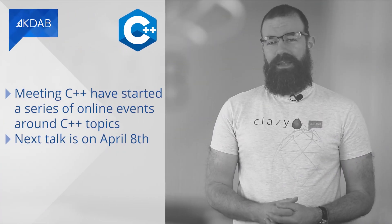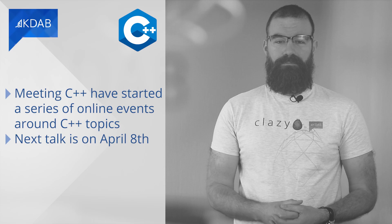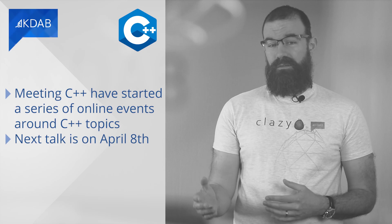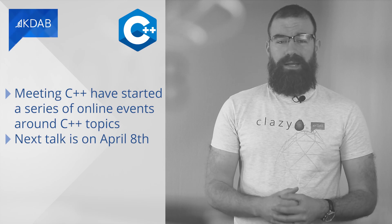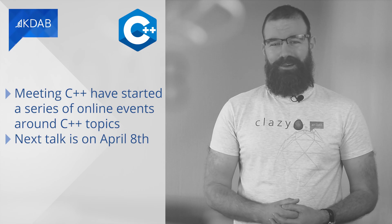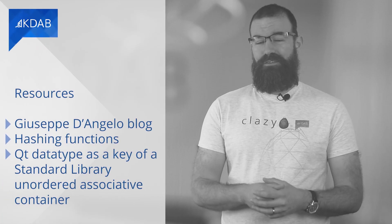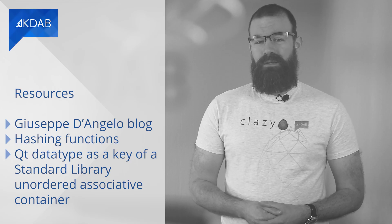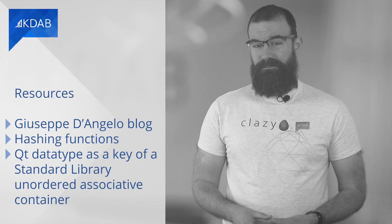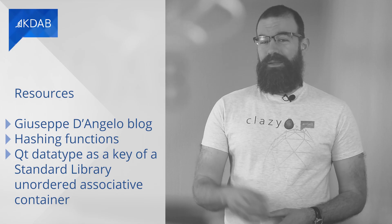In this month's announcements: Meeting C++ have started a series of online events around C++ topics. The next talk will happen on the 8th of April about C++ Insights — How Stuff Works, C++20 and more. Before and after the talks, there will be time for exchange with other participants — why not check it out? In his latest blog post, Giuseppe D'Angelo continues an earlier article regarding hashing functions, tackling a specific problem: how to use a Qt datatype as a key of a standard library unordered associative container. I recommend the link below if you want to learn more.